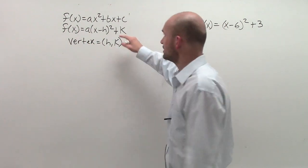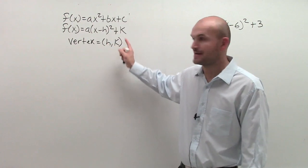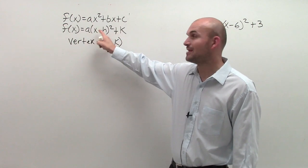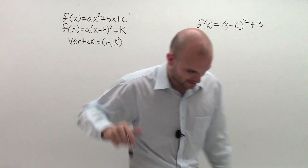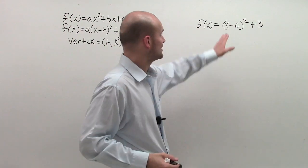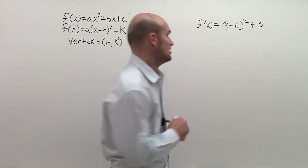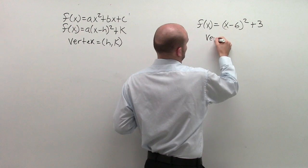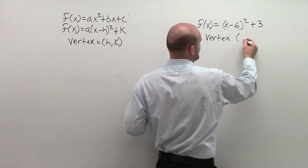Notice vertex is (h, k), standard form is (x - h)² + k. So that comes in handy because when we look at this, we could automatically say that the vertex in this problem is going to be positive (6, 3).